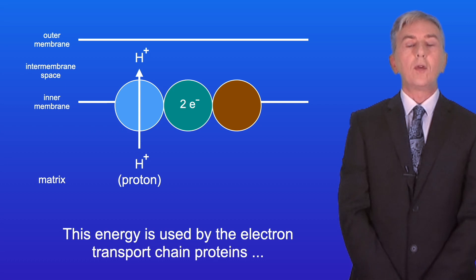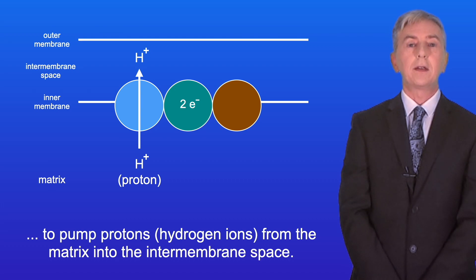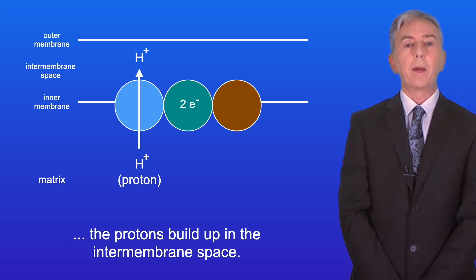This energy is used by the electron transport chain proteins to pump protons, in other words hydrogen ions, from the matrix into the intermembrane space. Because the inner membrane is impermeable to protons, the protons build up in the intermembrane space.